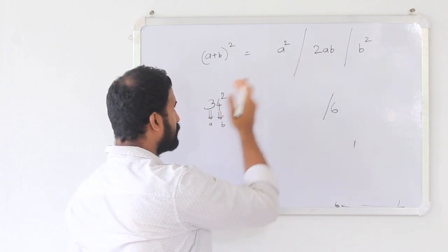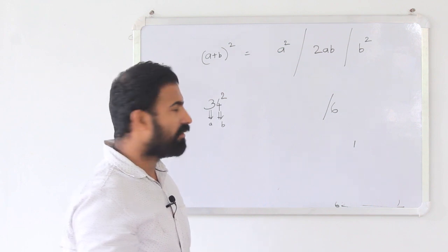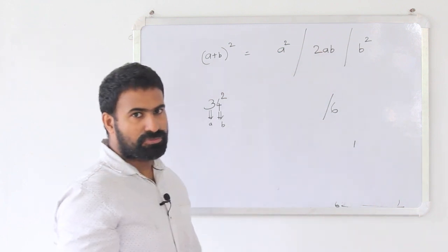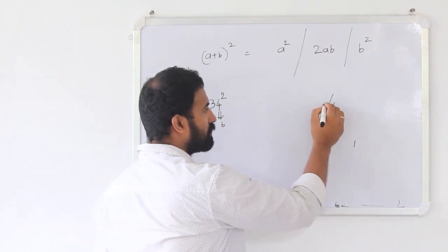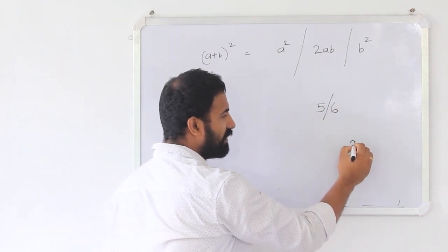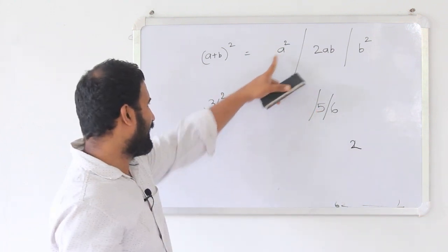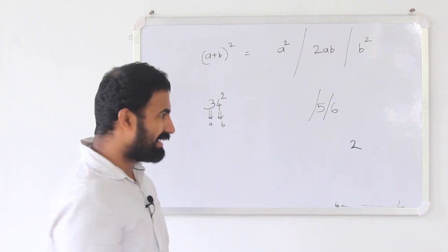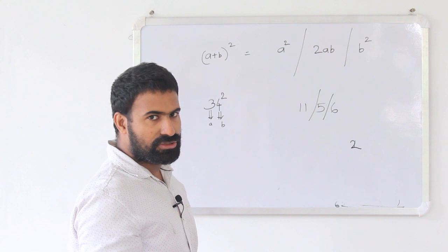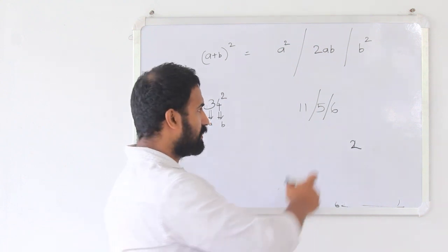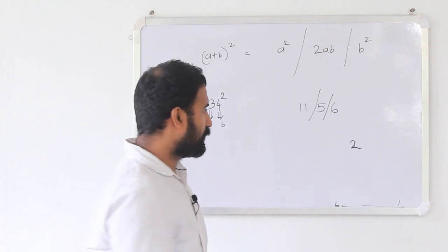Now the first operation: 4 squared is 16, write 6 and carry 1. The second operation is 2AB: 3 into 4 is 12, doubled is 24, plus carry 1 is 25, write 5 and carry 2. The third operation is A squared: 3 squared is 9, plus carry 2 is 11. So 34 squared equals 1156.